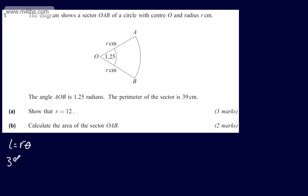So we can say that 39, which is the perimeter, will be equal to 2R plus R multiplied by theta. So we're going to have R multiplied by 1.25.